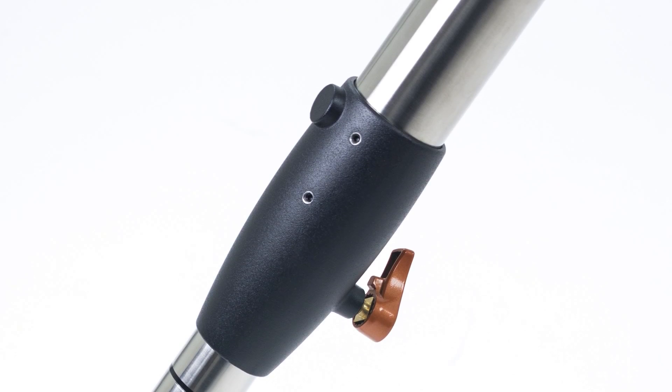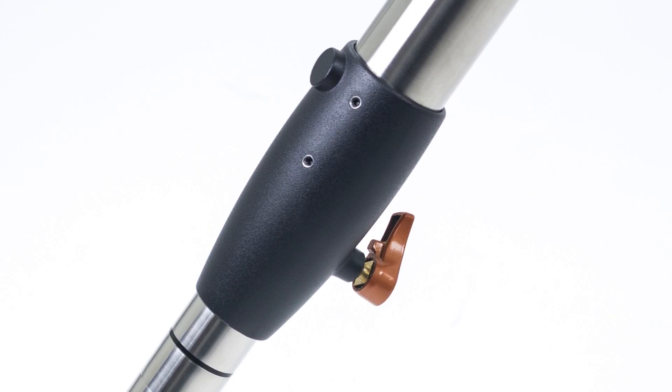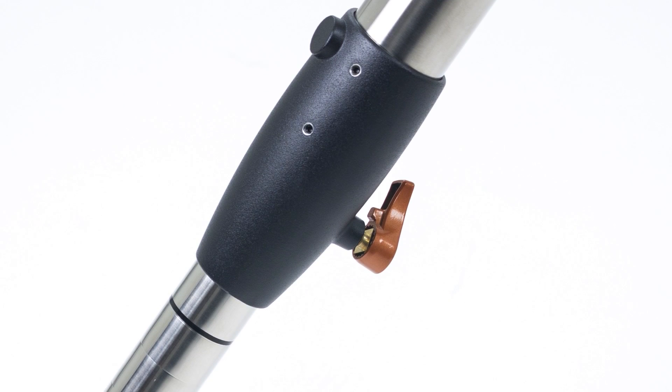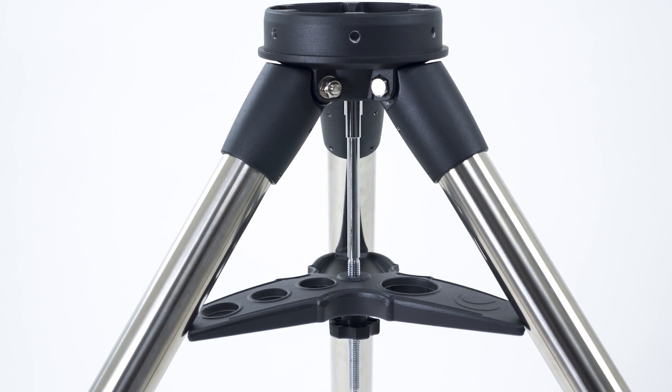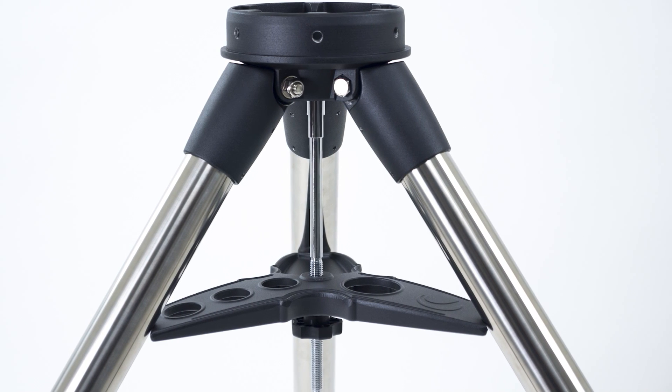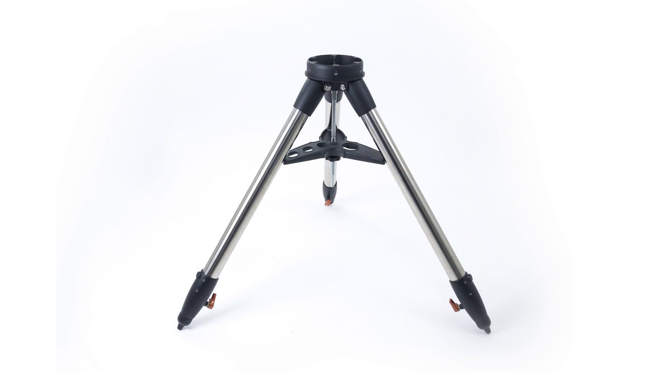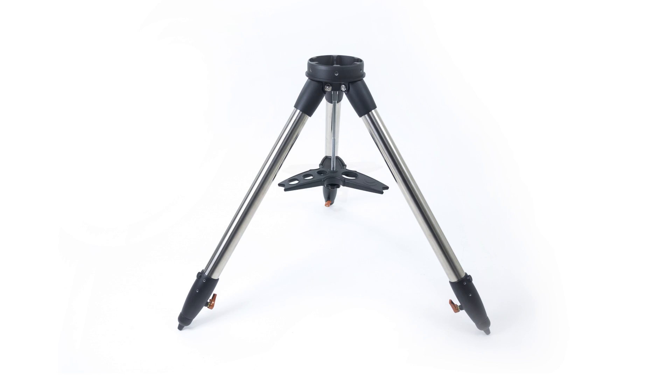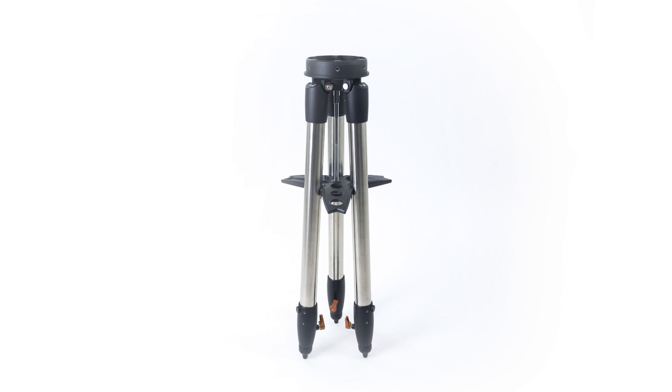The height adjustment lock levers are now inward facing to eliminate any potential trip hazard. And now we're including a new versatile accessory tray that we like to call the jack-of-all trays. The tray can stay installed on the tripod with the tripod legs collapsed for very quick and convenient storage.